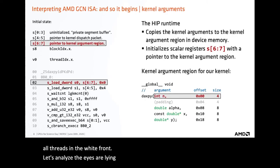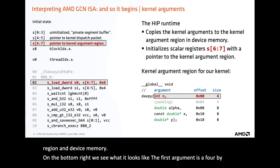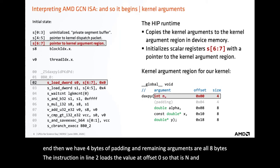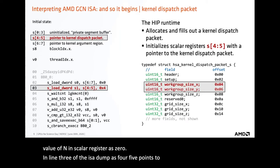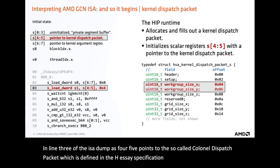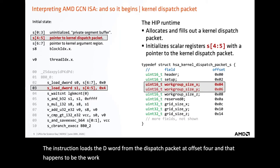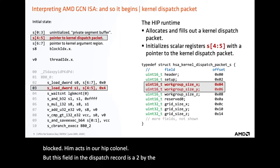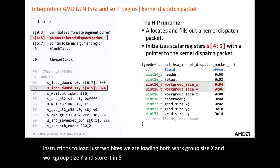S6:S7 in the instruction on line 2 holds a pointer to the kernel argument region in device memory. The first argument is a 4-byte int, then 4 bytes of padding, and the remaining arguments are all 8 bytes. The instruction in line 2 loads the value at offset 0, which is N, and stores it in scalar register S0. In line 3, S4:S5 points to the kernel dispatch packet, defined in the HSA specification. The instruction loads a d-word from the dispatch packet at offset 4, which is the workgroup size along the X dimension — block dim X in our HIP kernel. Since this field is a 2-byte value and we don't have instructions to load just 2 bytes, we load both workgroup size X and Y and store them in S1. We'll deal with the unneeded workgroup size Y in a moment.